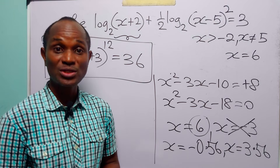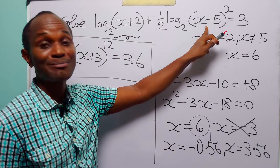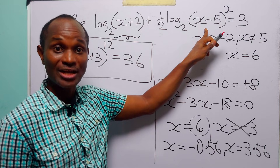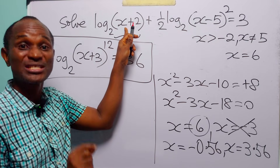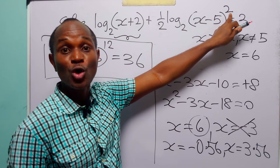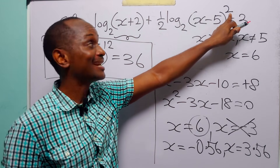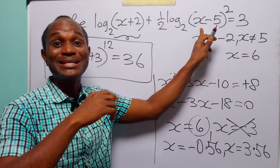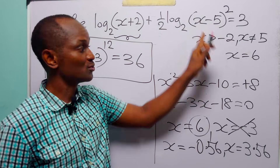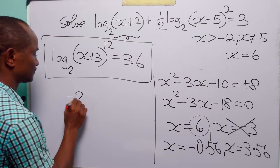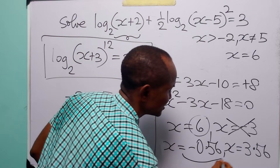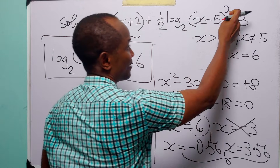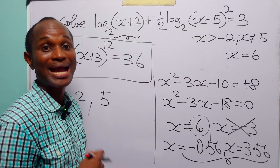So what happened? How did we lose two roots in the first method? Because of the square, x minus 5 is allowed to be negative — squaring a negative value gives a positive value. So when we applied the power rule in the first method, we expanded the restriction on that term from x must not equal 5 to x must be greater than 5, losing all roots between minus 2 and 5. In cases where you have a squared argument, it is always best to be careful how you apply the power rule of logarithms.